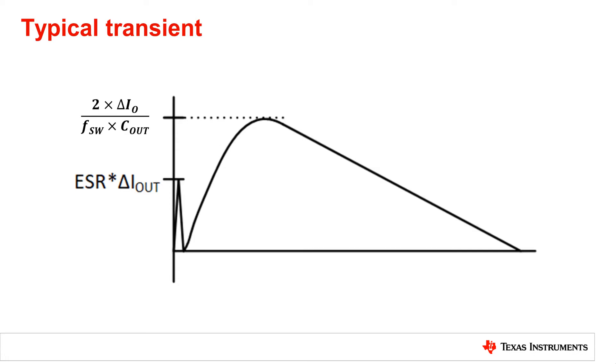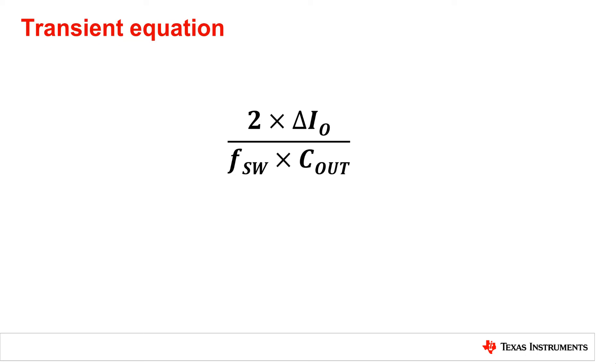The overshoot or undershoot will then return to its original value. While the equation shown is an approximation, it does give insight into what will reduce the overshoot and undershoot of a converter for a given load step.